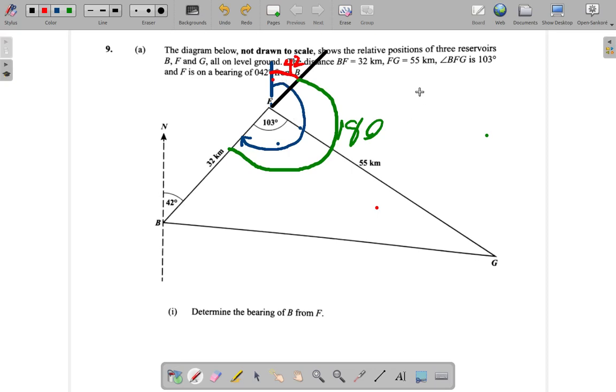So the total angle here, the bearing, is 180 plus 42. 2 and 0, 2, 8 and 4 is 12. Now the 2 carry 1, 1 and 1 is 2. So it's 222 degrees. So the bearing is 222 degrees.